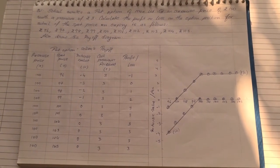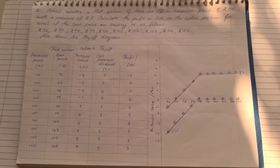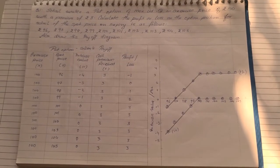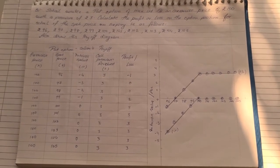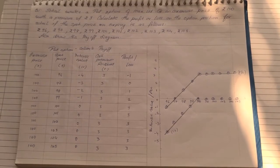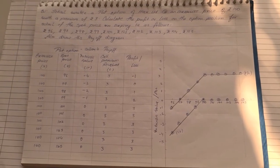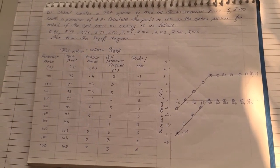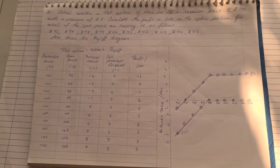This is how we solve a sum based on put option seller's payoff. This is the fourth type under the main topic of options — we had two sums based on call option covering buyer's and seller's payoff, and now two sums based on put option covering buyer's and seller's payoff. I hope everyone has watched all four videos and understood how to solve the sums. Thank you.